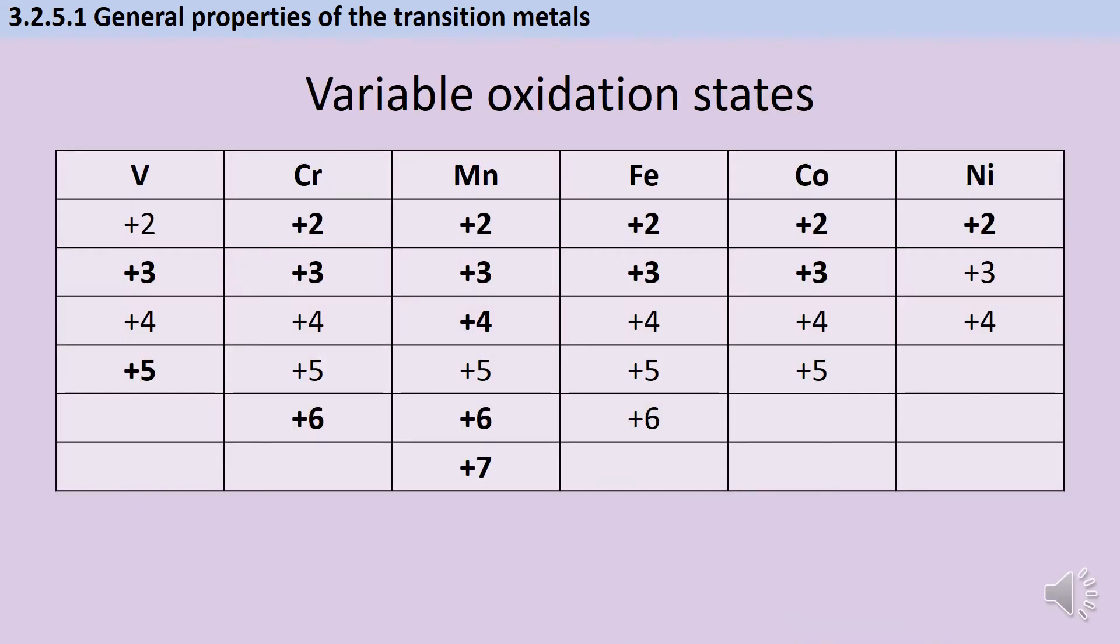If you're anything like most of the people I teach, when you learned that everything in group 1 makes ions with a single positive charge and everything in group 2 makes cations with a 2+ charge and elements in group 3 like aluminium make ions with a 3+ charge, probably the first thing you asked was, well, what about the d-block? What kind of ions do they make?